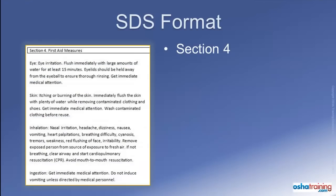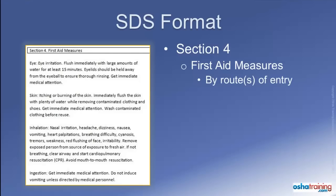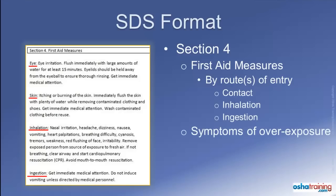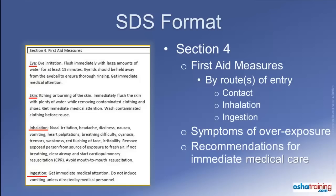Section 4 on a Safety Data Sheet describes the initial first aid measures that should be administered by responders to anyone who has experienced a chemical exposure. This information includes a list of aid for different routes of exposure, such as contact with eyes or skin, inhalation, or ingestion. Also included will be a description of the most common symptoms of overexposure including those which are acute or delayed, and recommendations for immediate medical care and special treatment that may be needed in some severe cases.